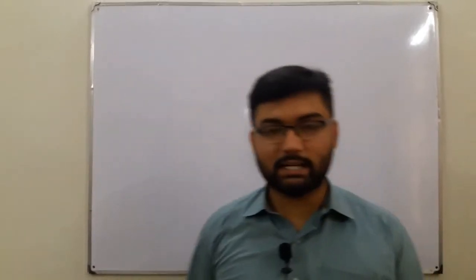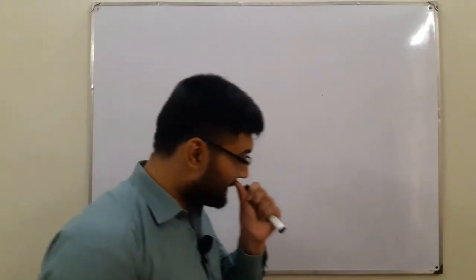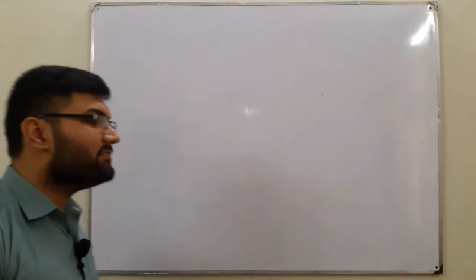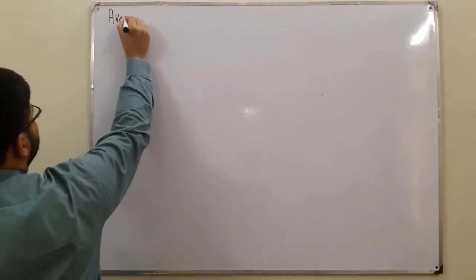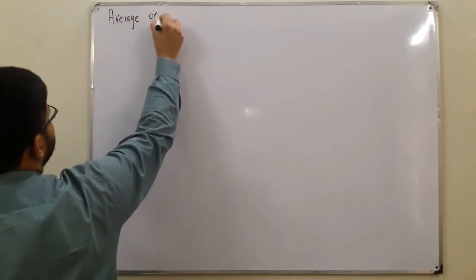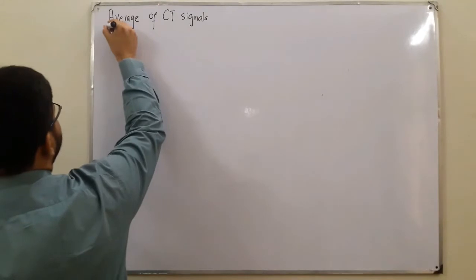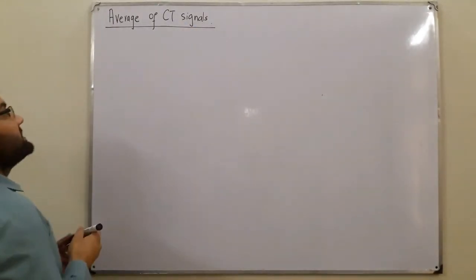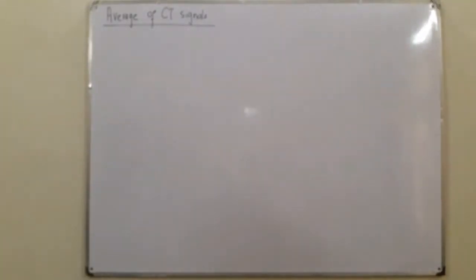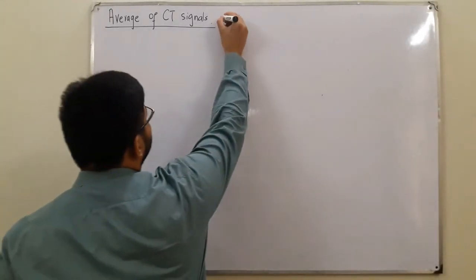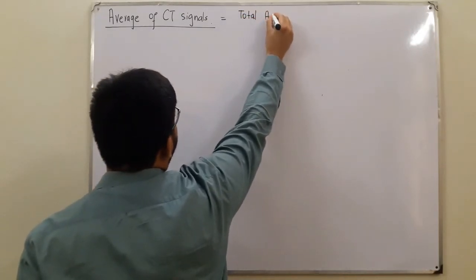Bismillahirrahmanirrahim, Assalamu Alaikum. Salah Khan here, and today we have another easy topic. We've seen the area in the previous videos; today we see the average of a signal. In this case, we look at the average of continuous time signals. This is a revision topic you've already studied in basic calculus or FSC. The average of a signal is given by the total area of the signal divided by the total time for which it occurs.